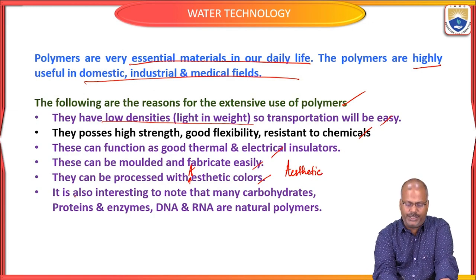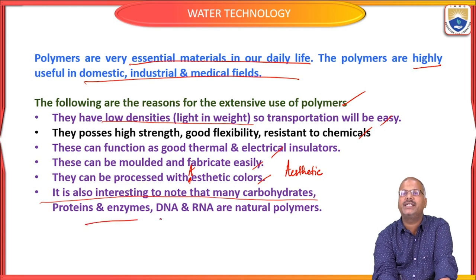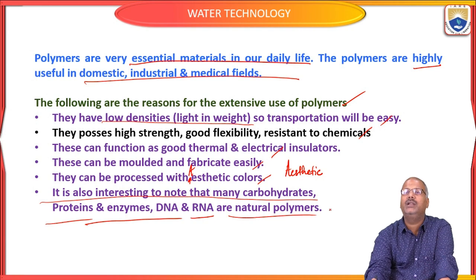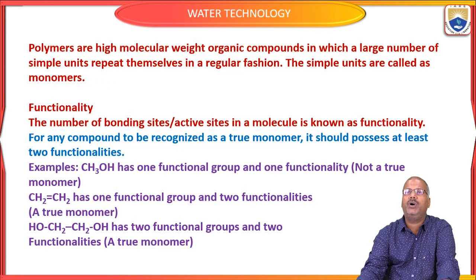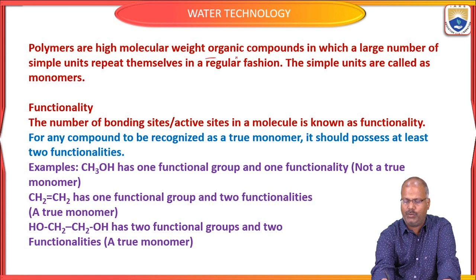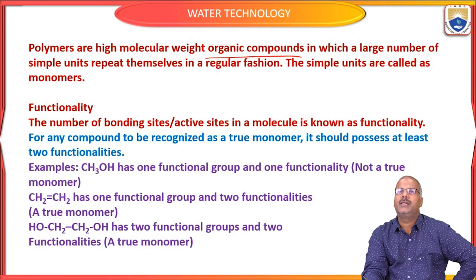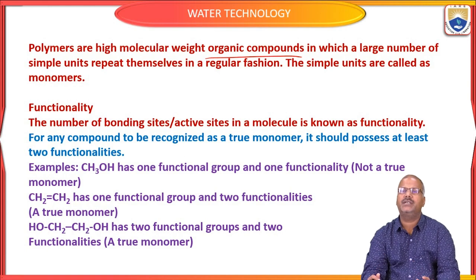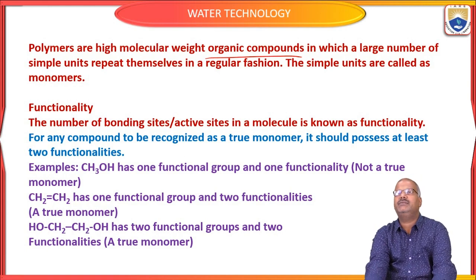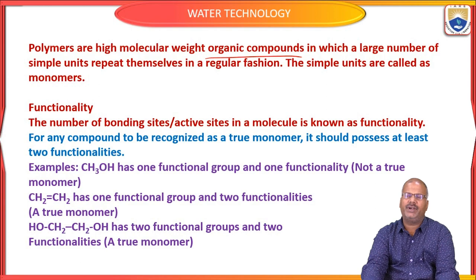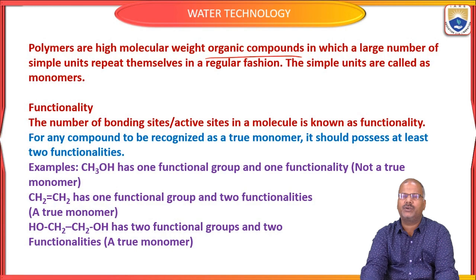It is also interesting to note that many carbohydrates, enzymes, proteins, DNA, and RNA are natural polymers. Polymers are high molecular weight organic compounds, basically made up of carbon and hydrogen with covalent bonds between chains, and also secondary bonds like hydrogen bonding and Van der Waals forces.